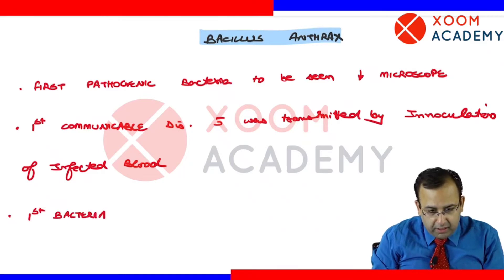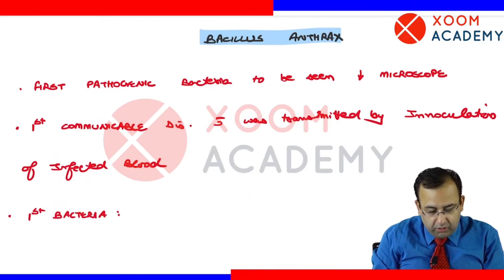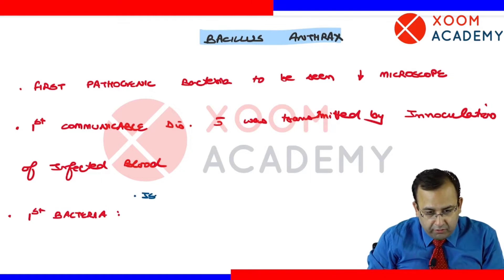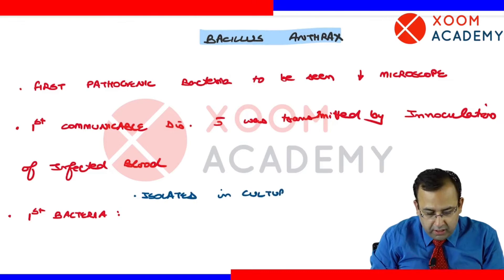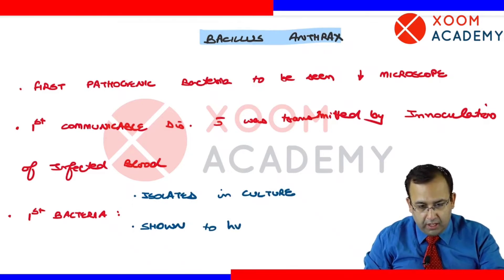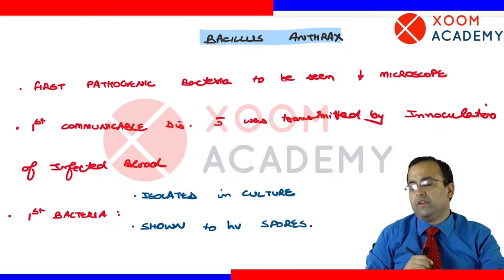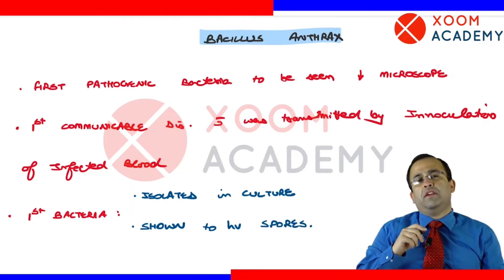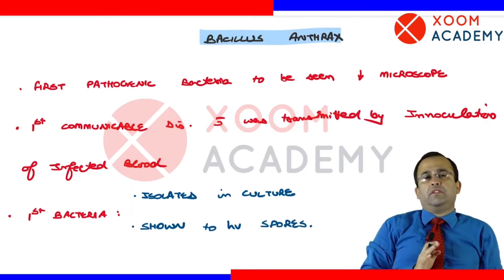Next, anthrax was the first bacteria that was isolated in culture and shown to have spores. These are the key historical firsts associated with anthrax.